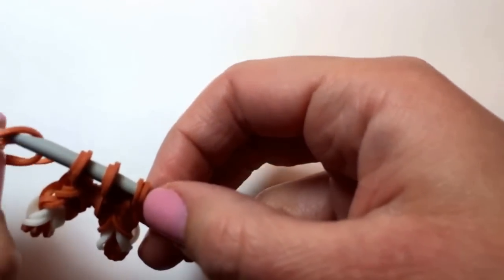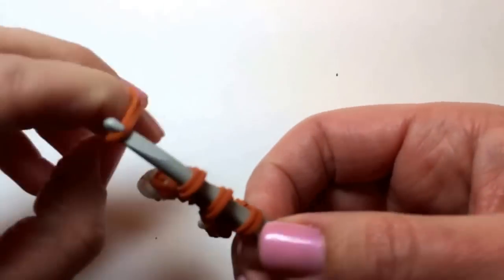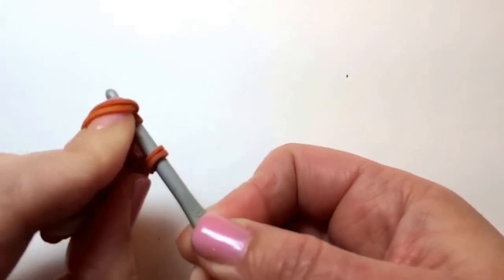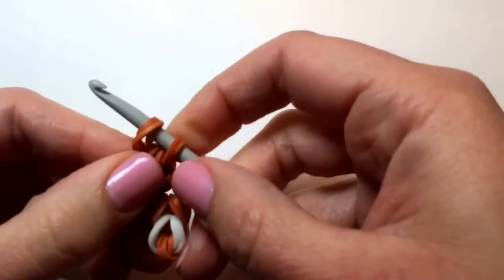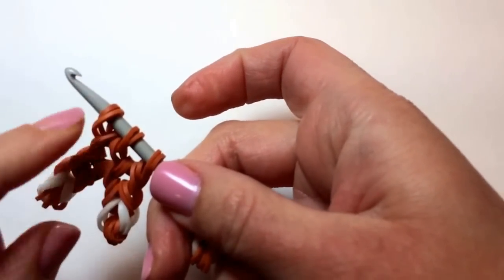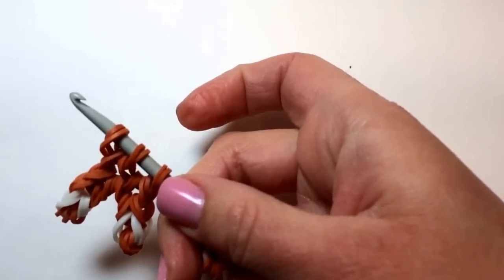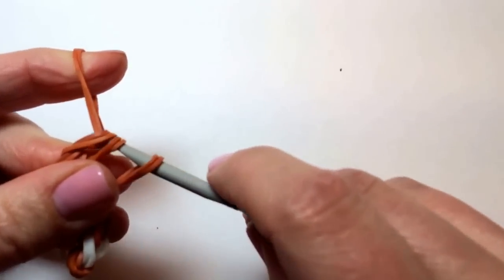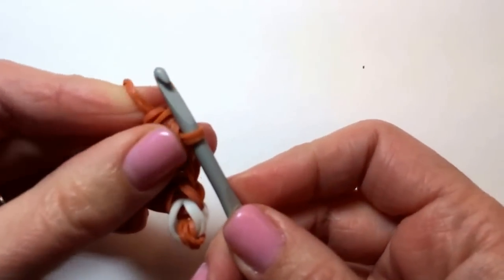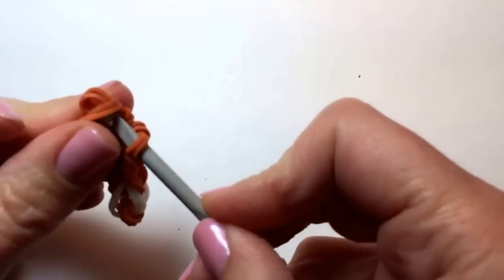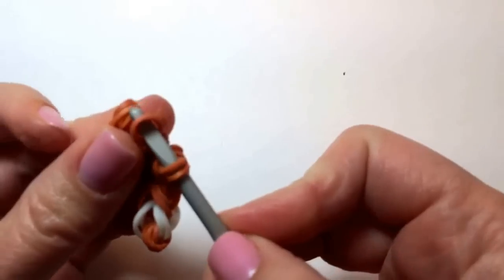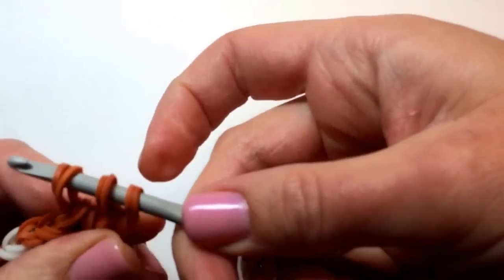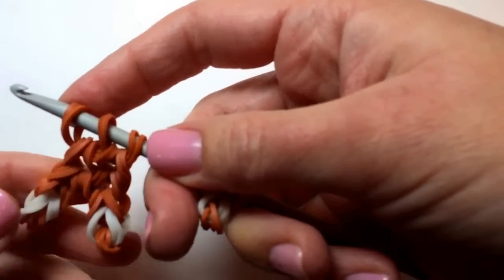Two more rubber bands. And now we're going to skip this one again. So we're going to pull through so that it's hooked on these two. So we've got it through all of them now. We're going to let it come out from that end. And catch again. And again.